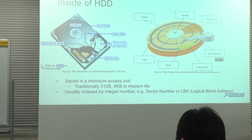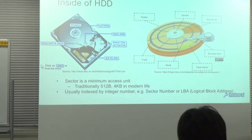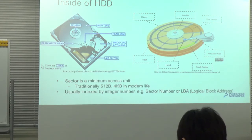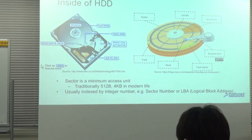The platter is logically divided into concentric rings. Each track is divided into sectors. The sector is basically the minimum access unit for this device. Traditionally it was 512 bytes; currently we usually use 4 kilobytes for a sector.